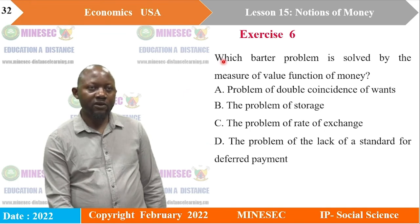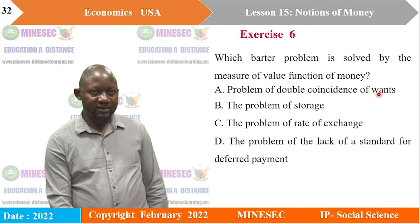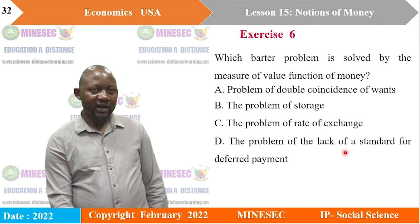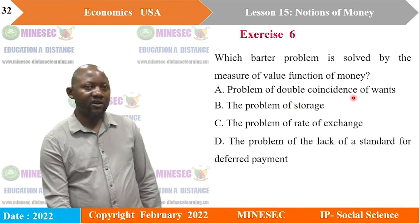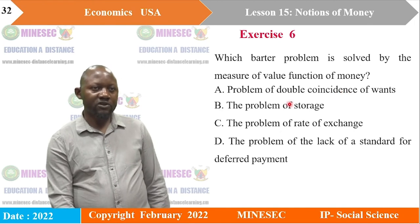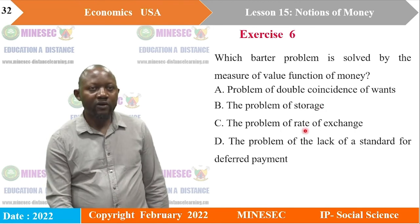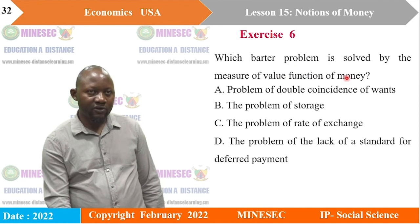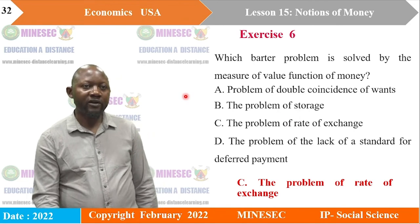The last MCQ: which barter problem is solved by the measure of value function of money? A) Problem of double coincidence of wants, B) Problem of storage, C) Problem of rate of exchange, or D) Problem of lack of standard for default payments. The problem of double coincidence of wants is solved by the exchange function; the problem of storage is solved by the store of value function; the problem of rate of exchange is solved by the measure of value function. So the correct answer is C.